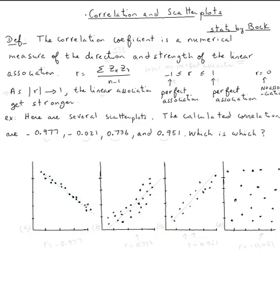The topic is correlation and scatter plots. The correlation coefficient is a numerical measure of the direction and strength of the linear association. We need a linear association.